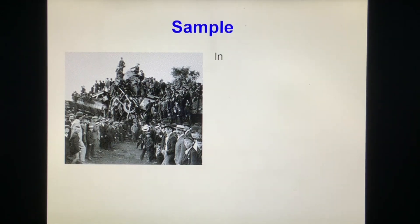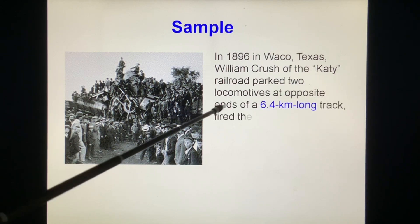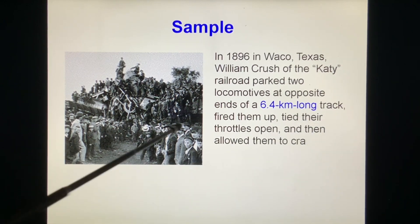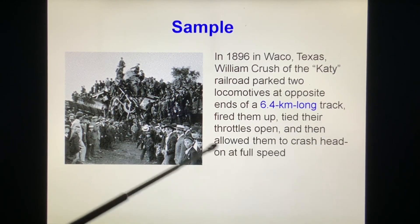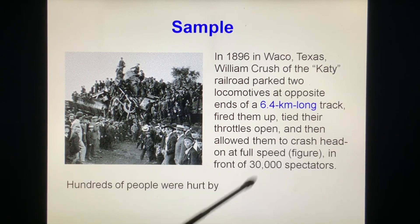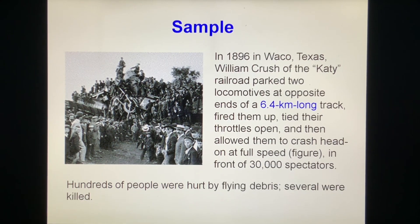Sample. In 1896 in Waco, Texas, a planned crash of the Katy Railway parked two locomotives at opposite ends of a 6.0 km long track, fired them up, tied their throttles open, and then allowed them to crash head on at full speed in front of 30,000 spectators. Hundreds of people were hurt by flying debris. Several were killed. Why? As energy.